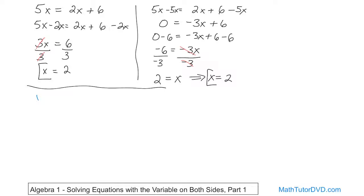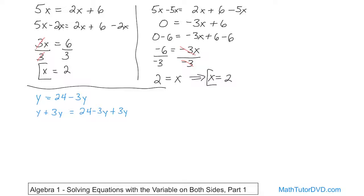Let's work our next problem. What if we have y equals 24 minus 3y? We have a y over here and negative 3y over here. I could move this one over here or that one over here — either way, I have to get them on the same side. I'm going to move the negative 3y. Since it's negative, I do the opposite and add 3y to both sides. On the right, the 3y's cancel to 0. On the left, y is really 1y, so 1y plus 3y gives 4y equals 24.